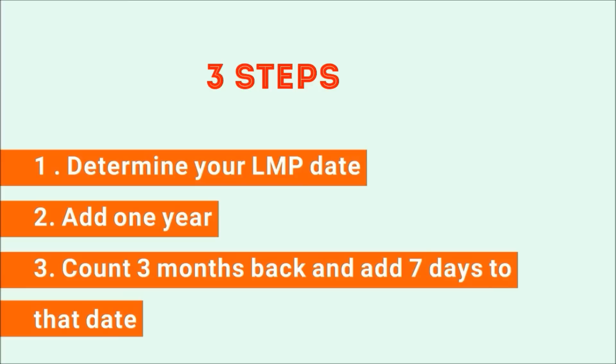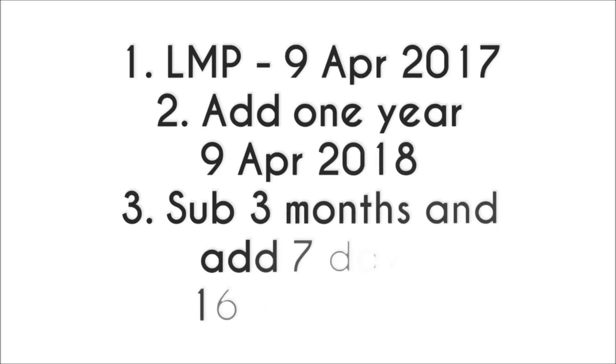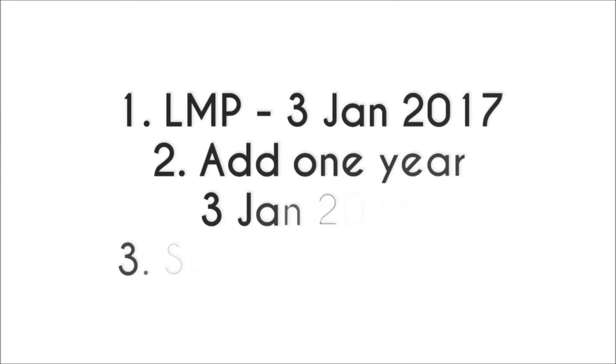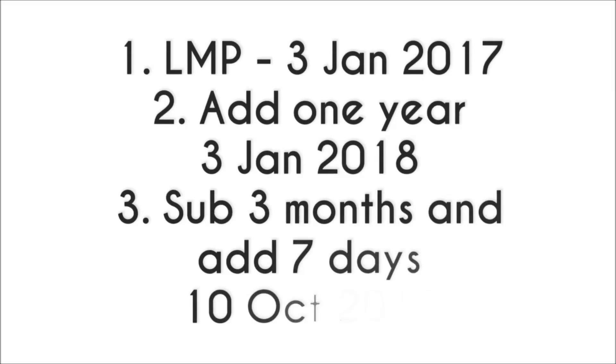For example, if your LMP is 9 April 2017, adding one year gives 9 April 2018, then subtracting three months and adding seven days gives 16 January 2018. Another example: if your LMP is 3 January 2017, adding one year gives 3 January 2018, then subtracting three months and adding seven days gives 10 October 2017.